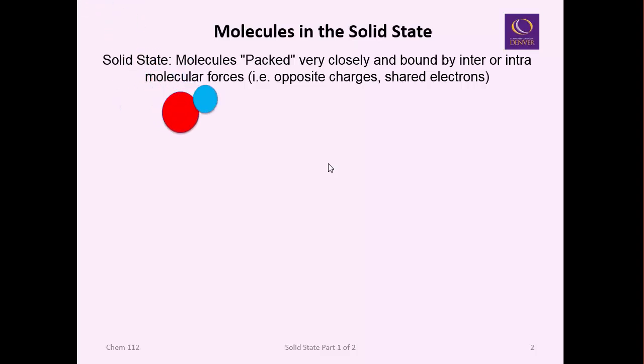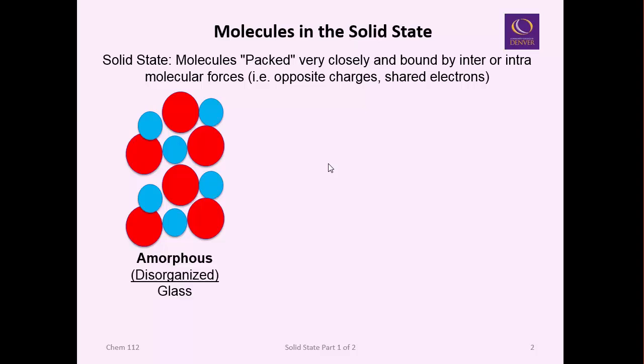Those molecules may come together as ions, positive and negative ions. If they're randomly organized, although bound by opposite charges, this is considered an amorphous structure. An example of that, non-ionic but covalently bound, is glass.